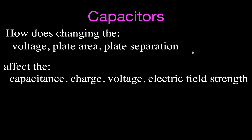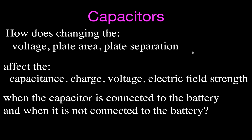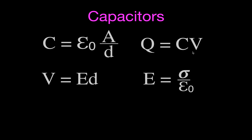We're going to look at that in two different cases: one where we keep the capacitor connected to the battery, and the second when we disconnect the capacitor from the battery. We'll be using four key equations: capacitance equals the permittivity of free space times the plate area divided by the plate separation; charge equals capacitance times voltage; voltage equals electric field strength times distance; and electric field strength equals charge density divided by the permittivity of free space.